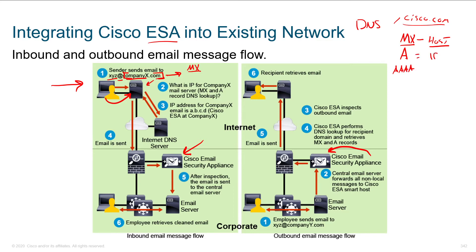There's also an A record or quad-A record that points to either the IPv4 or IPv6 address of where the server actually is. In normal circumstances without an ESA, these addresses would be your mail server — for example, Microsoft Exchange. In this circumstance, this IP address is not going to point to Exchange; it's going to point to the ESA.